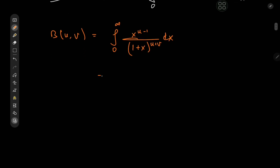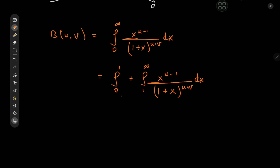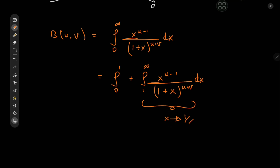So I'm going to split this integral into one integral from 0 to 1 and then another from 1 to infinity of x to the u minus 1 divided by 1 plus x to the u plus v dx. This is something we're going to carry along throughout the proof, and we're going to play around with this second integral. Notice that when we have an integral from 1 to infinity, I really enjoy invoking the transformation x to 1/x.